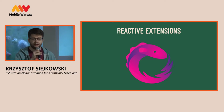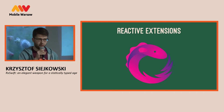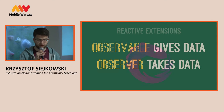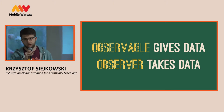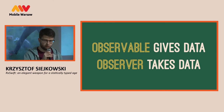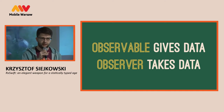They provide a very coherent, uniform API to work with Observables. The pattern consists of only two blocks. One is the Observable, and this is something that gives data.